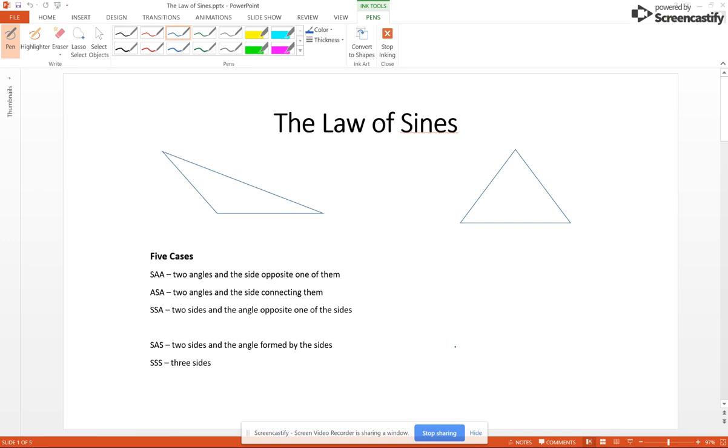The law of sines is a formula that we're going to use to solve triangles that are not right triangles. Now we have two types of triangles that we're going to be looking at. The first one is where there's an angle that's bigger than 90 degrees and this is called an obtuse triangle. And then the other one is where all three angles are less than 90 degrees and that is called an acute triangle.